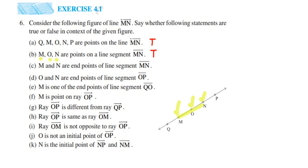The next statement is: M and N are the endpoints of line segment MN. Yes, if they have given line segment MN, then M and N will be the endpoints. Similarly, if they had given segment AB, then A and B would be the endpoints. So the answer is true.